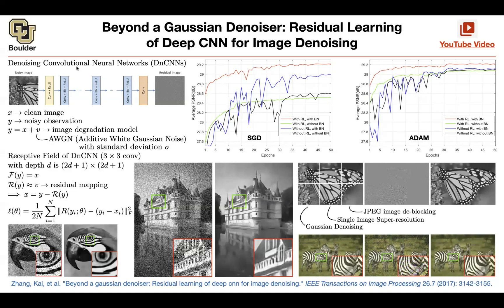Rather than learning a non-linear function that takes your noisy image and gives you the denoised image, learn the difference between the noisy image and the actual noiseless image — just learn the residual. We saw this idea before, now it's in the context of denoisers. Residual learning is helping a lot, and batch normalization is also helping to some extent for this particular task of denoising.